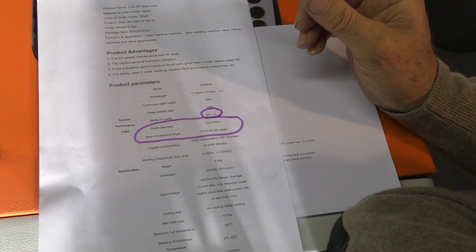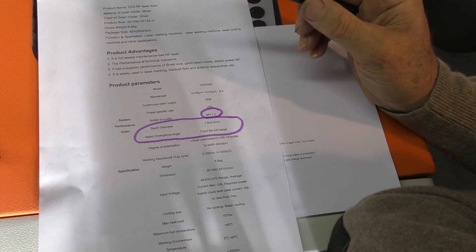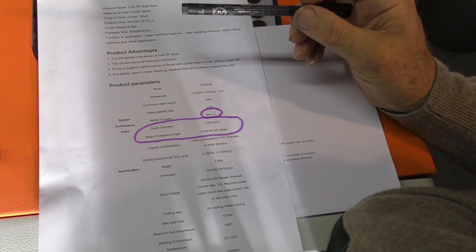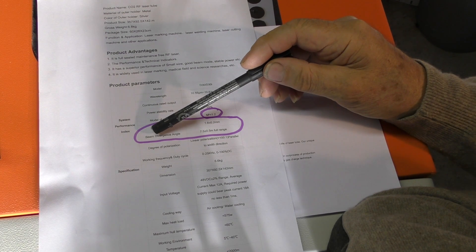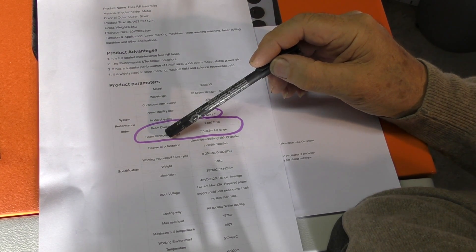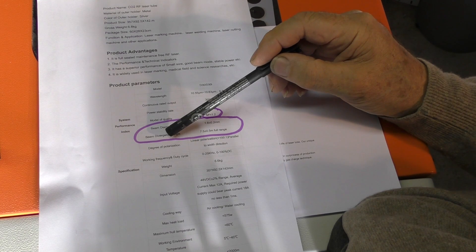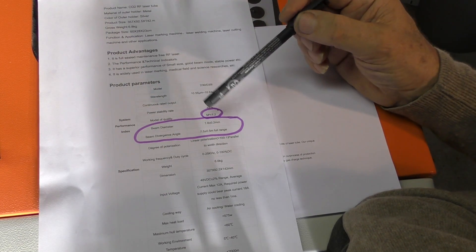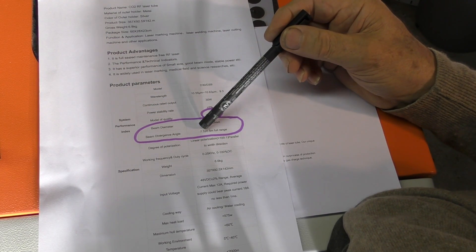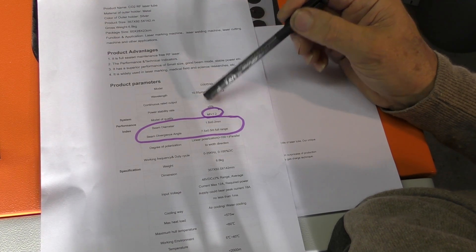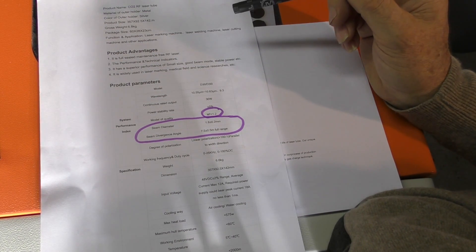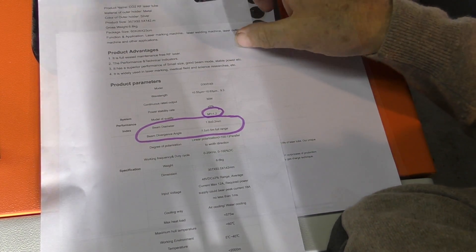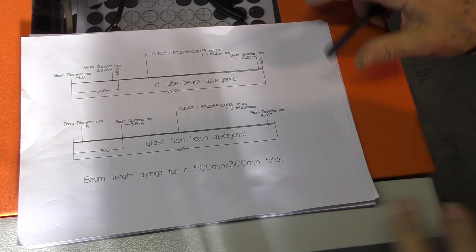Then we look at this thing here called beam divergence angle. Remember what it was before? 3.1 milliradians. Now it's 7.5. In other words, it's a much wider angle. What does that mean in reality?